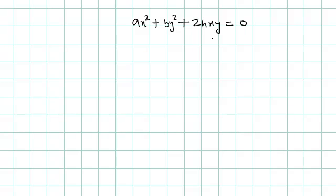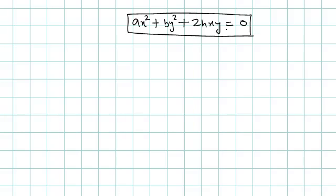This means the conic is passing through the origin, because (0, 0) will always satisfy this equation. Now, what should be the condition on a, b, and h so that it represents a pair of lines? To understand that, let's treat this as a quadratic in x: ax² + 2hy·x, where the constant term is with respect to x.